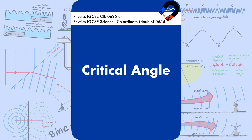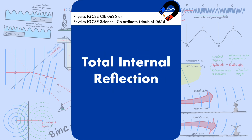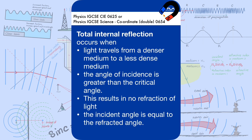The critical angle is the incident angle in a denser medium that results in the refracted angle being 90 degrees. Total internal reflection occurs when light travels from a denser medium to a less dense medium and the angle of incidence is greater than the critical angle, resulting in no refraction of light, and the incident angle is equal to the reflected angle.